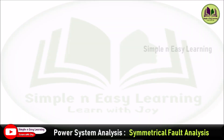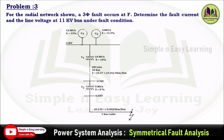Symmetrical fault analysis using Thevenin's theorem, problem number 3: for the radial network shown, a three-phase fault occurs at point F. We need to determine the fault current and the line voltage at the 11 kV bus under fault condition. This radial network consists of two generators connected in parallel to a common 11 kV bus bar.